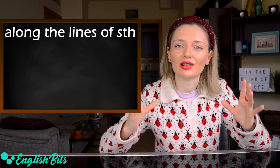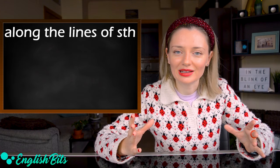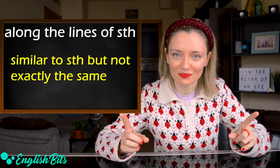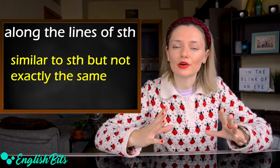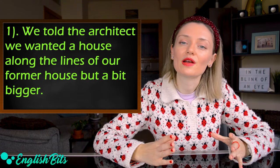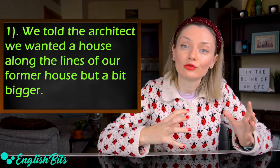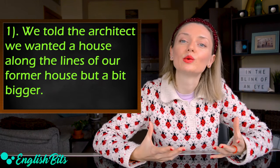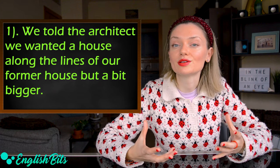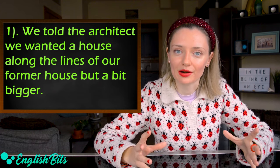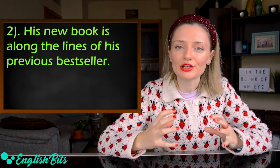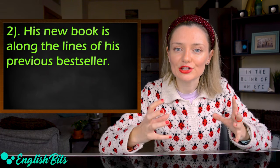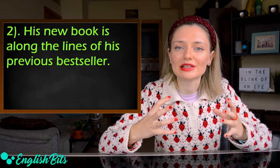Number eight: 'along the lines of something.' It means 'similar to something but not exactly the same.' For example: 'We told the architect we wanted a house along the lines of our former house but a bit bigger.' And: 'His new book is along the lines of his previous bestseller.'